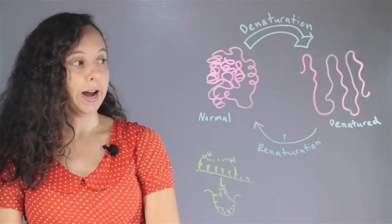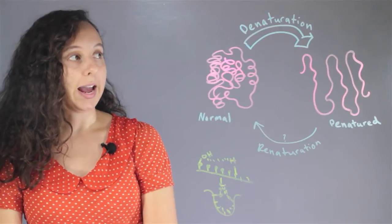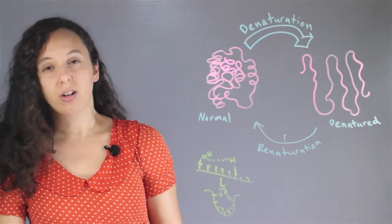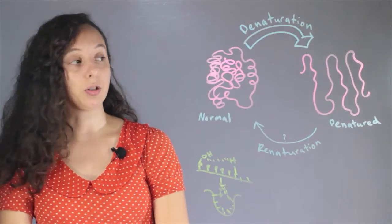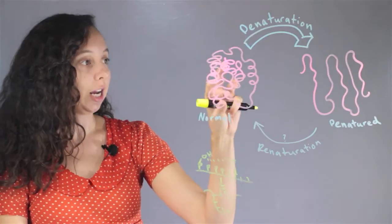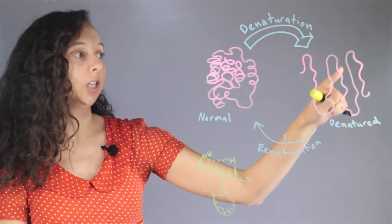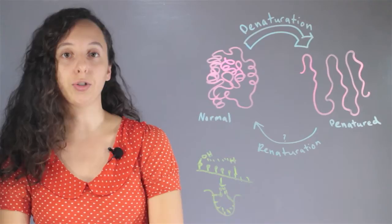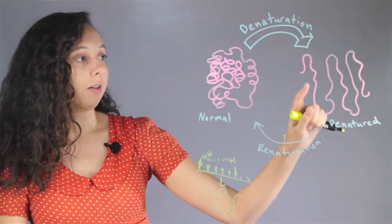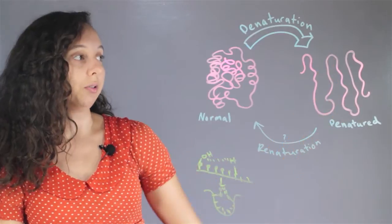And if you denature them, it's basically a way of breaking up the shape and breaking up all these bonds that aren't as strong as covalent, but they're still pretty strong. And so you basically take its scrambly 3D shape and turn it into just a string. So it all came from a little string and denaturing it is just making it return back to its single strand form.